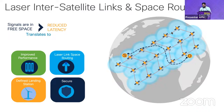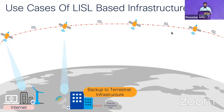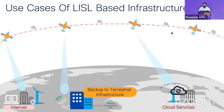With inter-satellite links we can have improved performance, defined landing stations, and some form of physical security. Key use cases include internet connectivity via ISLs to ground stations, backup for terrestrial networks — which is a really important use case — and direct cloud service connectivity.